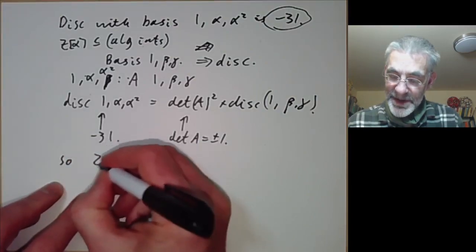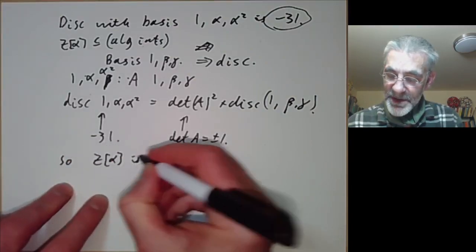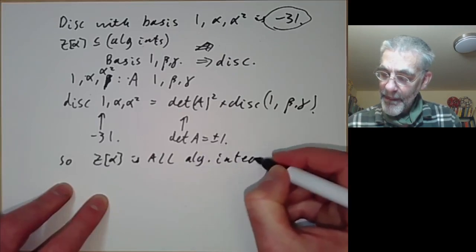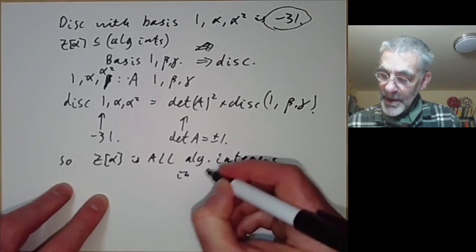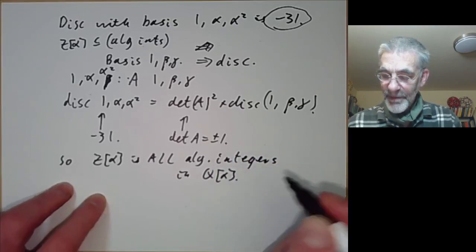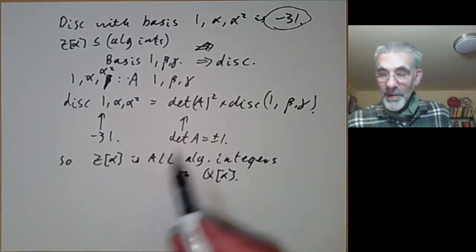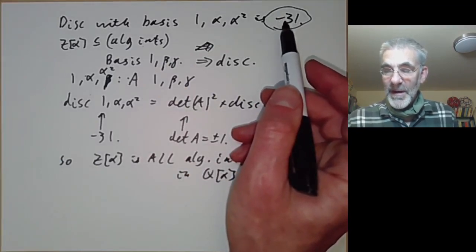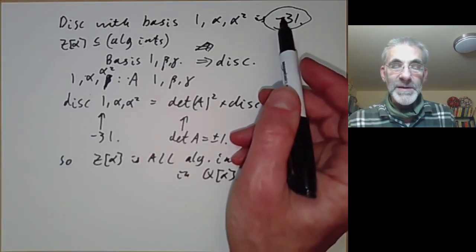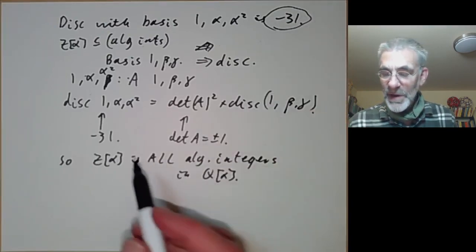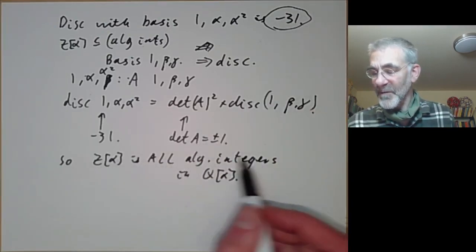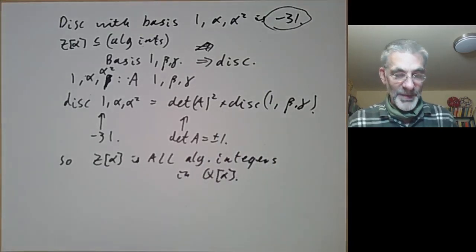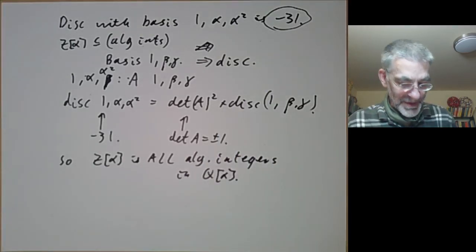If the discriminant contains a square factor, it can be quite difficult to work out the full ring of algebraic integers — for that, one can consult algebraic number theory.